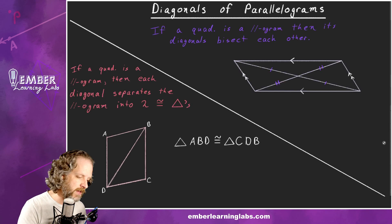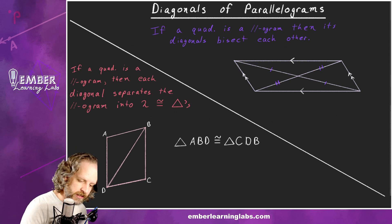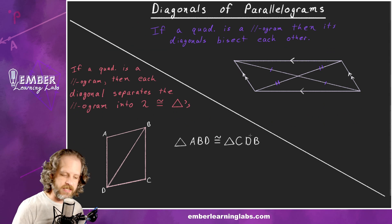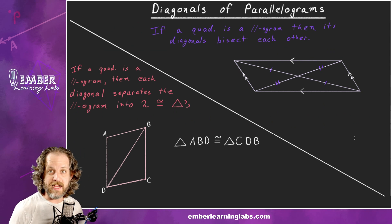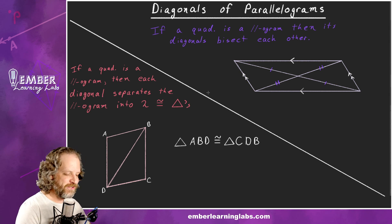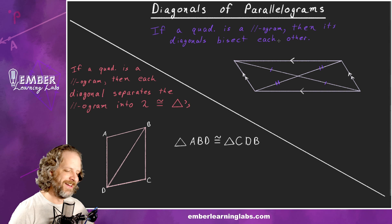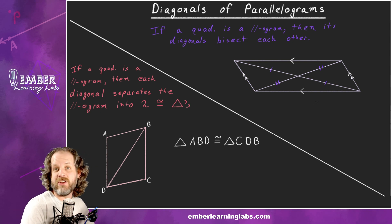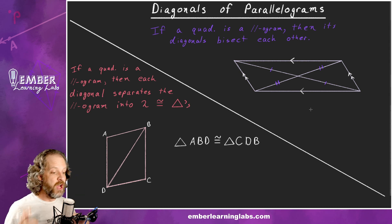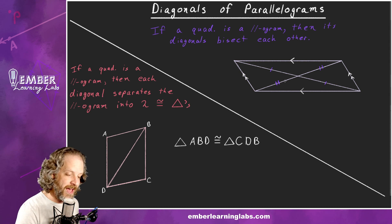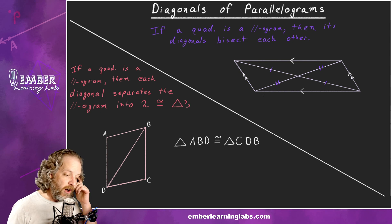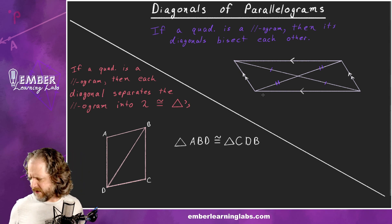Now two more theorems about the diagonals of a parallelogram. Theorem 5: If a quadrilateral is a parallelogram, then its diagonals bisect each other. Bisect means it cuts in half — so in a proof, this segment is congruent to that segment, and this segment is congruent to that one.